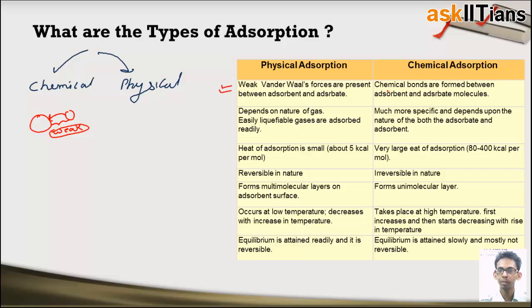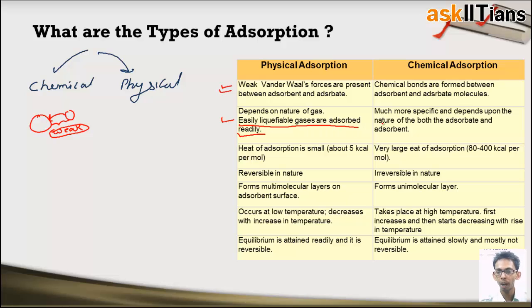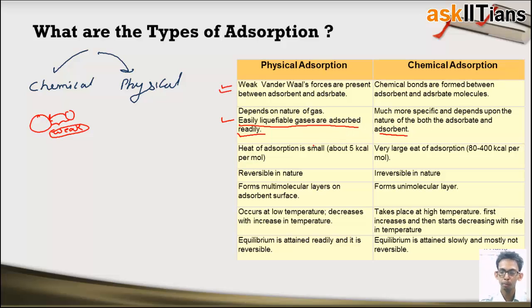Physical adsorption depends on the nature of the gas — easily liquefiable gases are adsorbed more easily. Chemical adsorption, however, is much more specific compared to physical adsorption, and it highly depends on the nature of both the adsorbate and the adsorbent.